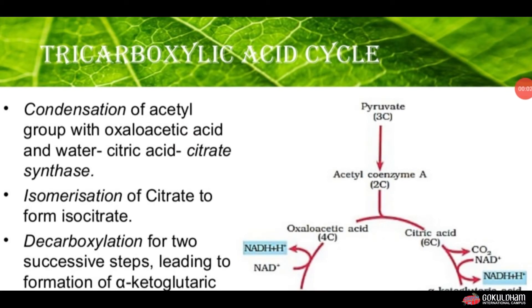Now let us see what happened with the pyruvate produced by glycolysis. We have already seen that pyruvate or pyruvic acid is first converted into acetyl coenzyme A, and then this acetyl coenzyme A enters the mitochondria for the Krebs cycle, also called the citric acid cycle or tricarboxylic acid cycle.